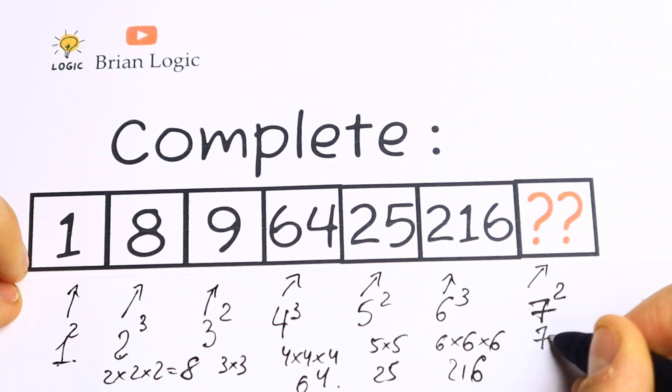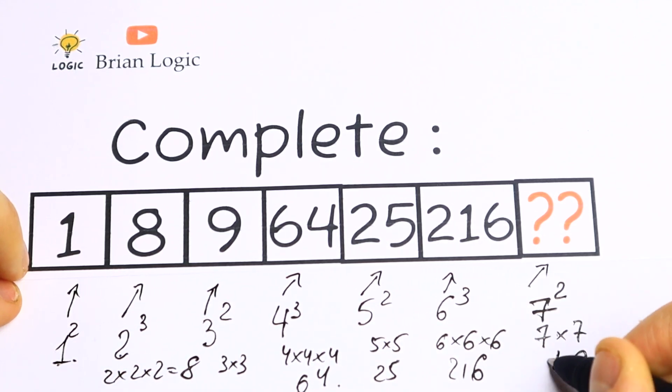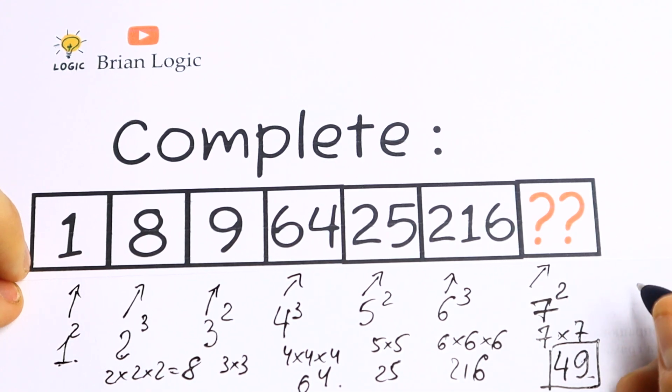If we raise this 7 to the second power, 7 times 7 will be 49. And this will be our answer.